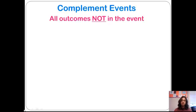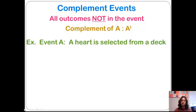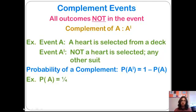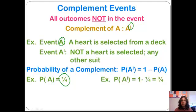Moving on to complement events — a complement event covers all outcomes not in the original event. For example, event A is that a heart is selected from a deck. The complement, A prime, is that a non-heart is selected — any other suit. If the probability of A is 1 out of 4, then the probability of the complement — not a heart — would be 3 out of 4, covering every other possible scenario.